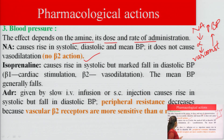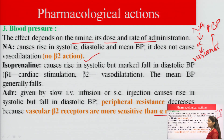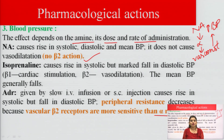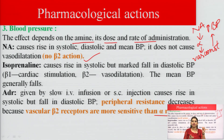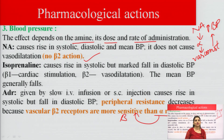Adrenaline given by slow IV infusion or subcutaneous injection causes a rise in systolic but a fall in diastolic blood pressure, because vascular beta-2 receptors are more sensitive than alpha receptors. Initially, adrenaline causes vasoconstriction via alpha receptors, raising BP. As adrenaline degrades and only small amounts remain, it selectively activates the more sensitive beta-2 receptors, causing vasodilation and decreasing peripheral resistance.